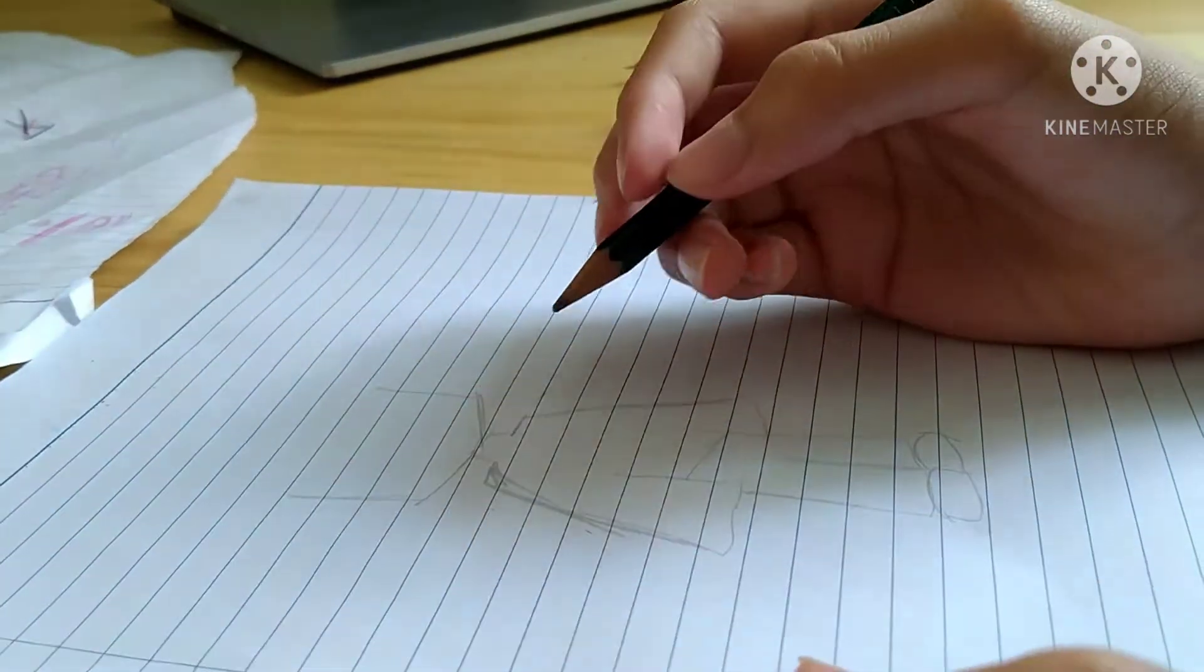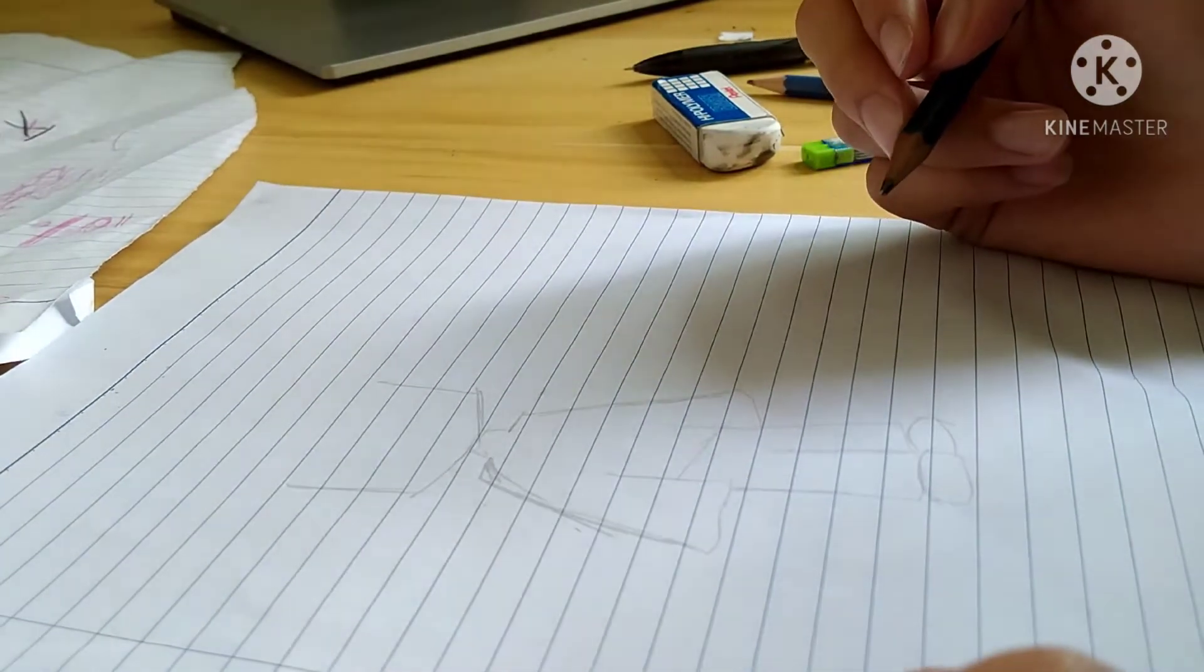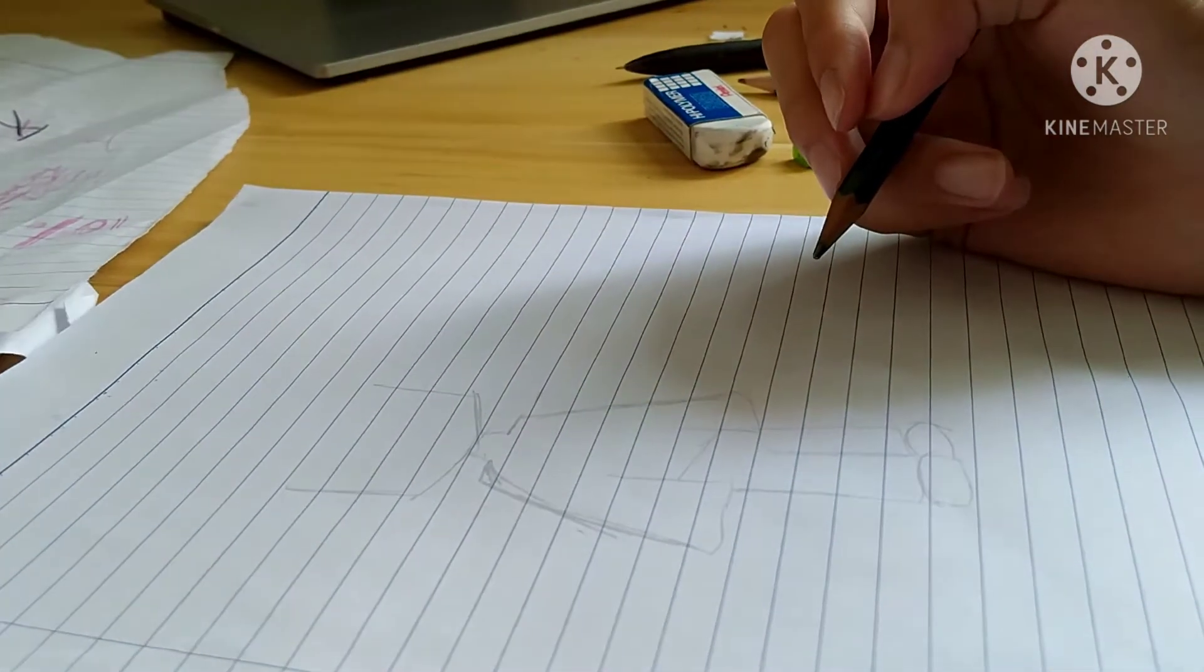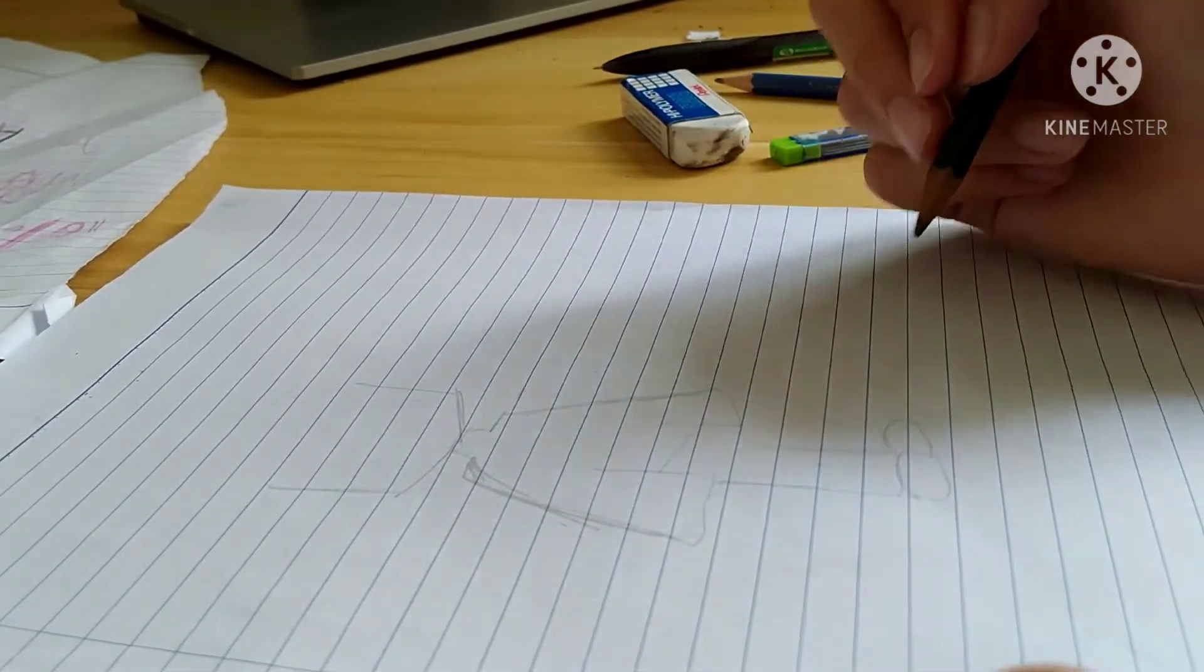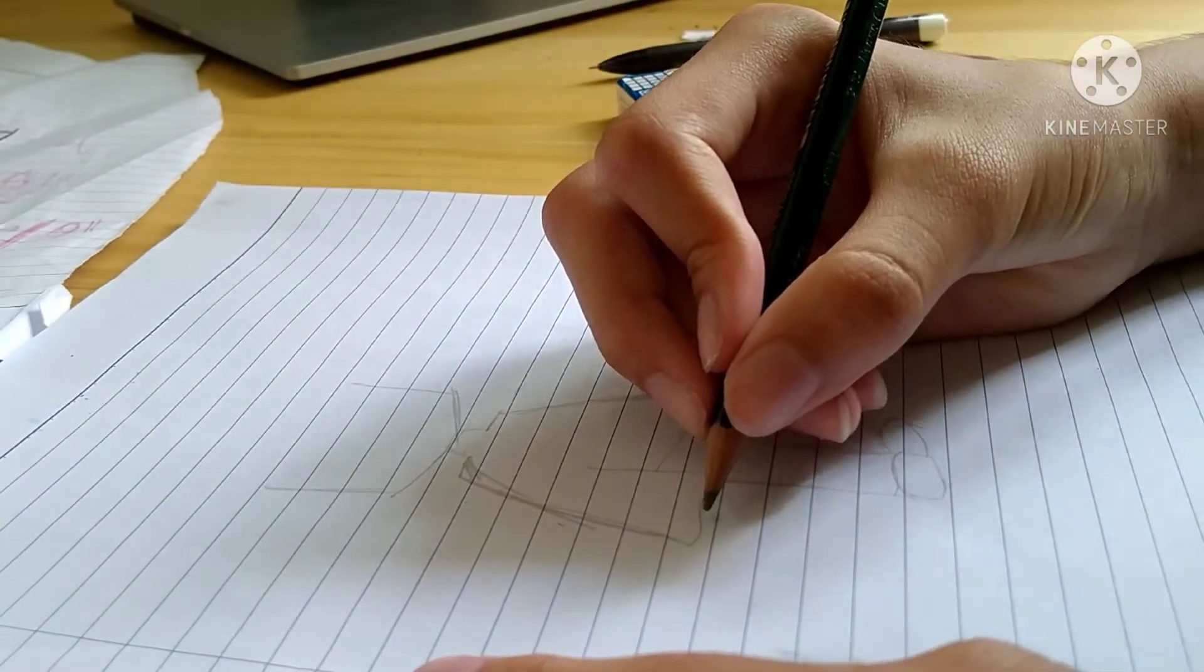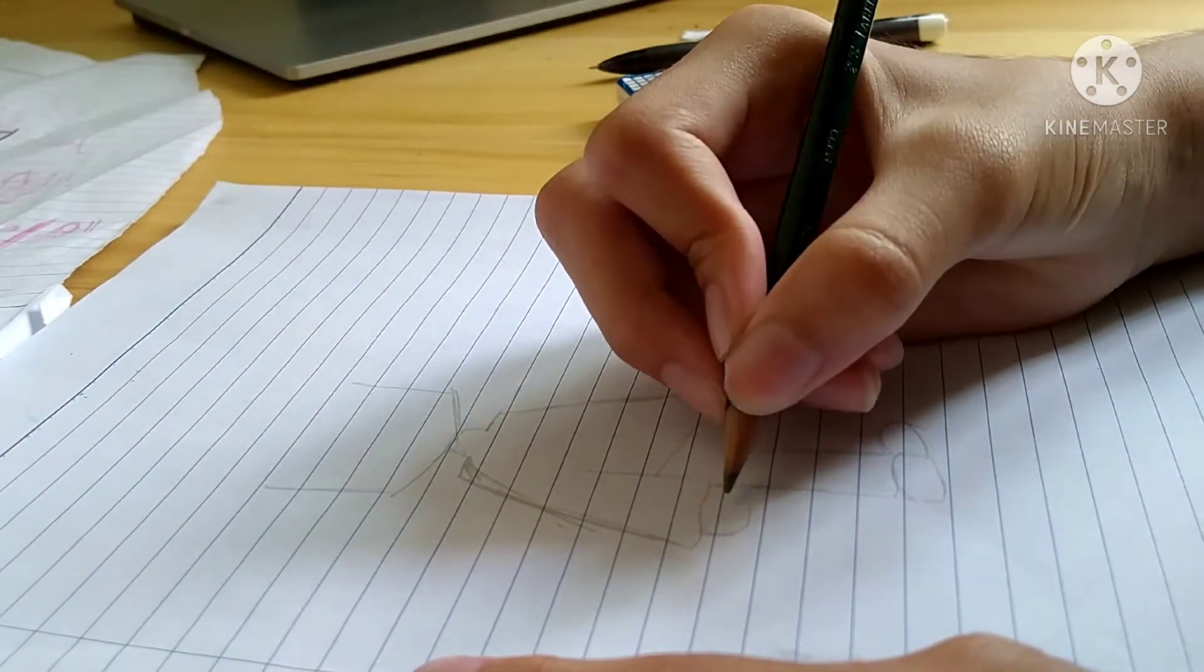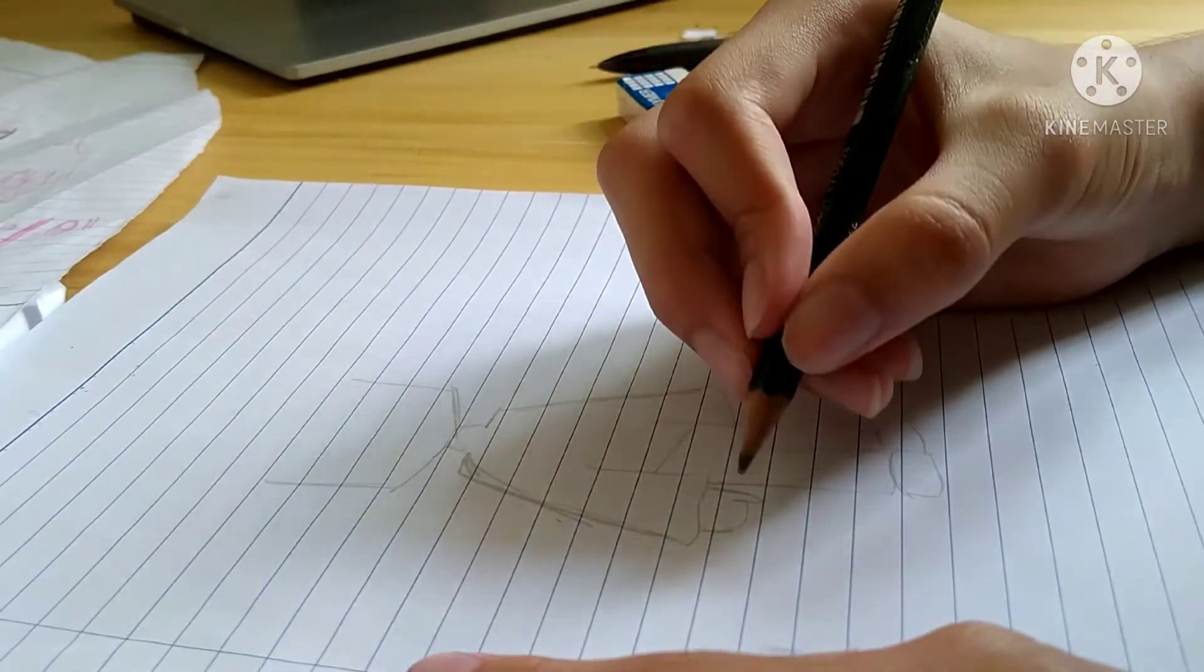Now, the hands. Now this is the tricky part about this. Wait. Can you see my face? Okay, then the tricky part is the hands. Okay, draw like this. First, we start with the thumb.